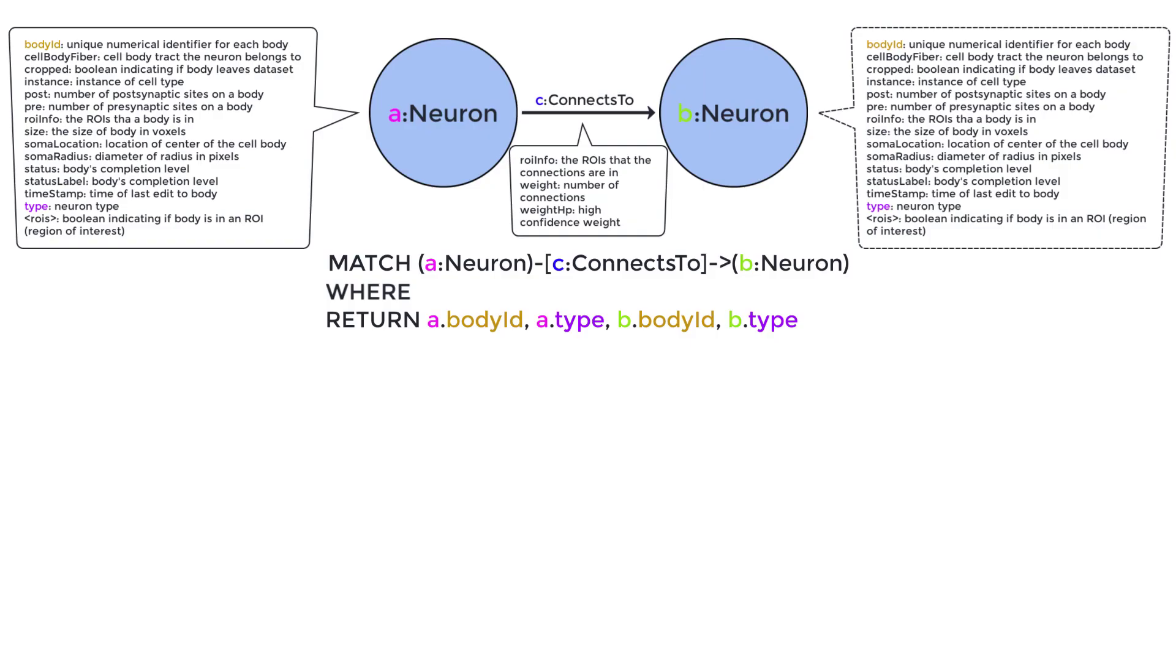We can do this with the where statement, which goes in between the match and return statements. Say that we want to look at connections between Kenyan cells, KCs, and mushroom body output neurons, M-bonds. We know from literature that KCs are presynaptic to M-bonds, so here A would be a KC and B would be an M-bond. We can specify the neuron types of A and B in the where statement using the property type of neuron nodes.